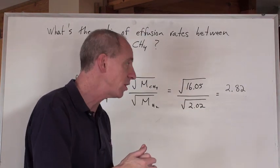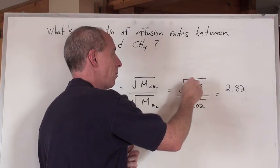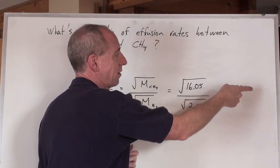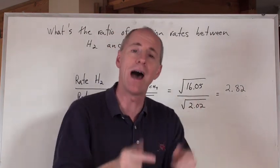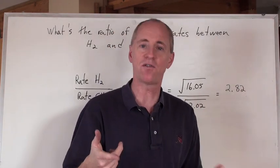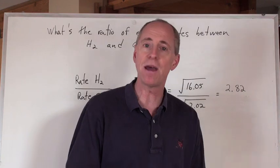You're going to get there, that's about 4, that's about 1 point something, so that sounds right, 2.82. The hydrogen is 2.82 times faster at a given temperature than methane is.